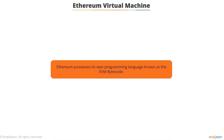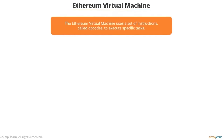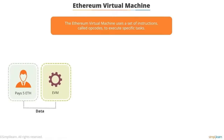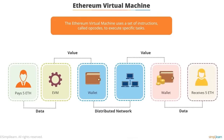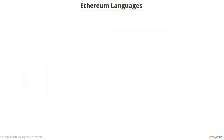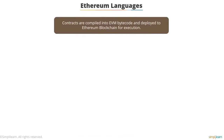Once code is written in higher-level programming languages, it can be compiled to EVM bytecode. The EVM uses a set of instructions called opcodes to execute specific tasks. If a user triggers a transaction of 5 ETH using his desktop wallet, the wallet sends the message to the EVM, which connects with the wallet address on the Ethereum network to process the transaction and send it to the receiver. Smart contracts are written in Ethereum-specific programming languages. Every contract written for Ethereum is compiled into EVM bytecode and deployed to the Ethereum blockchain for execution.